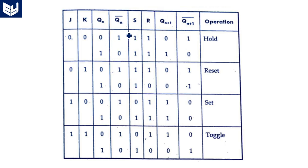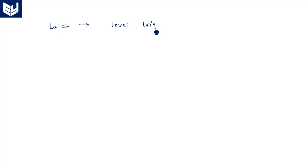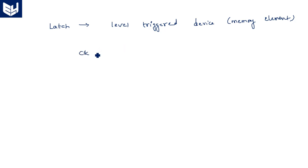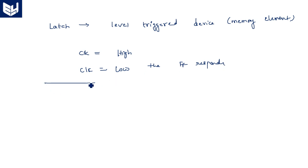How is this JK latch going to be operated? Whenever we say latch, it is nothing but a level-triggered device or memory element. When the clock is equal to either high or low, the flip-flop responds. This is what a latch is. If it is a flip-flop, then it has to respond for either the rising edge or falling edge.